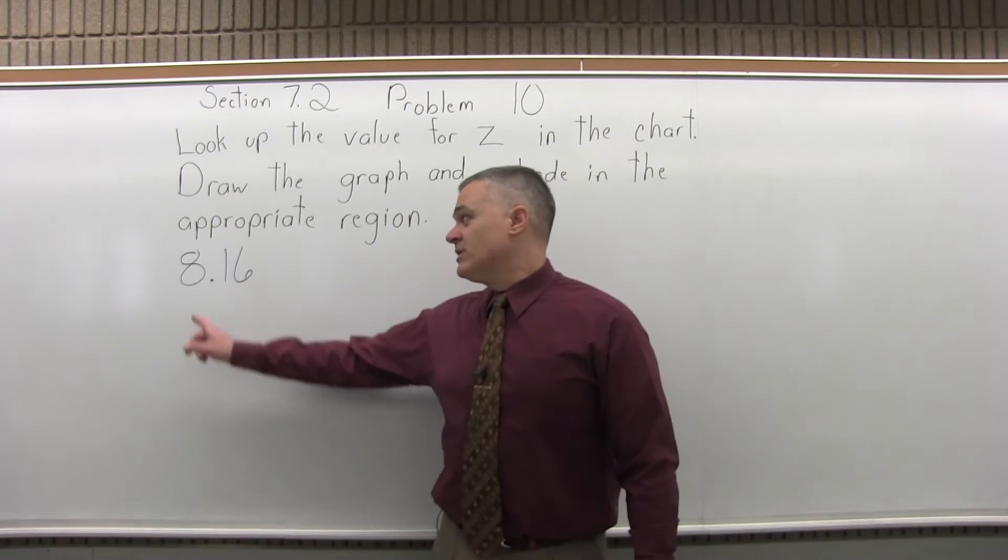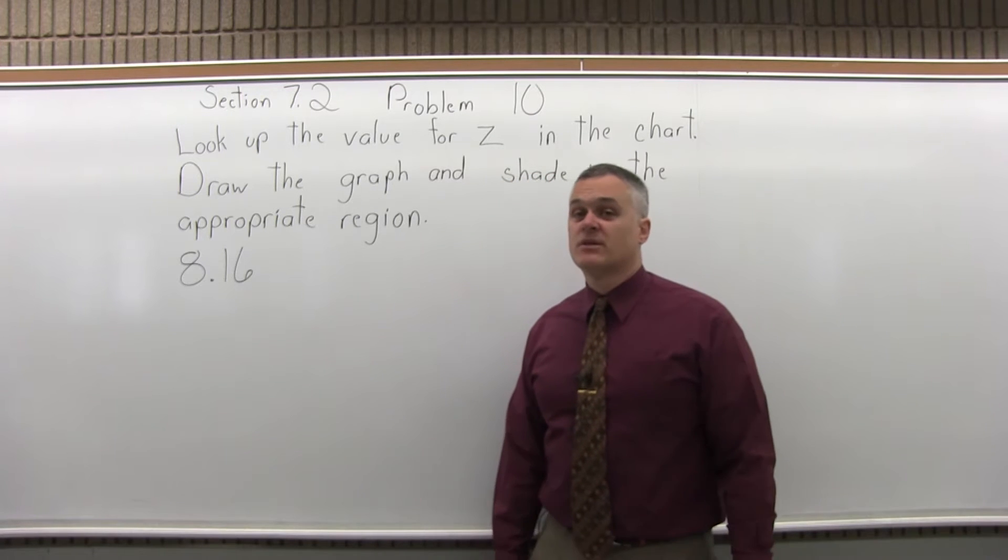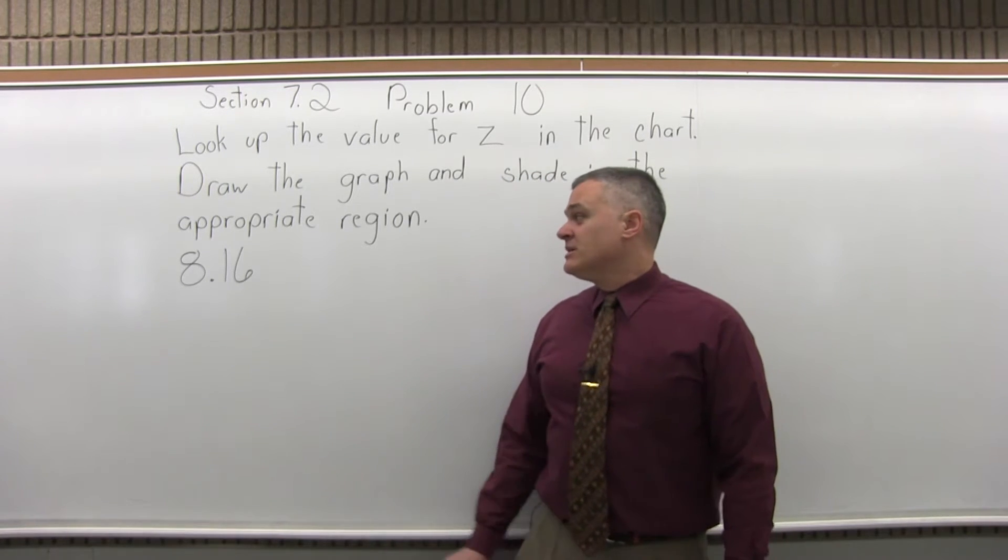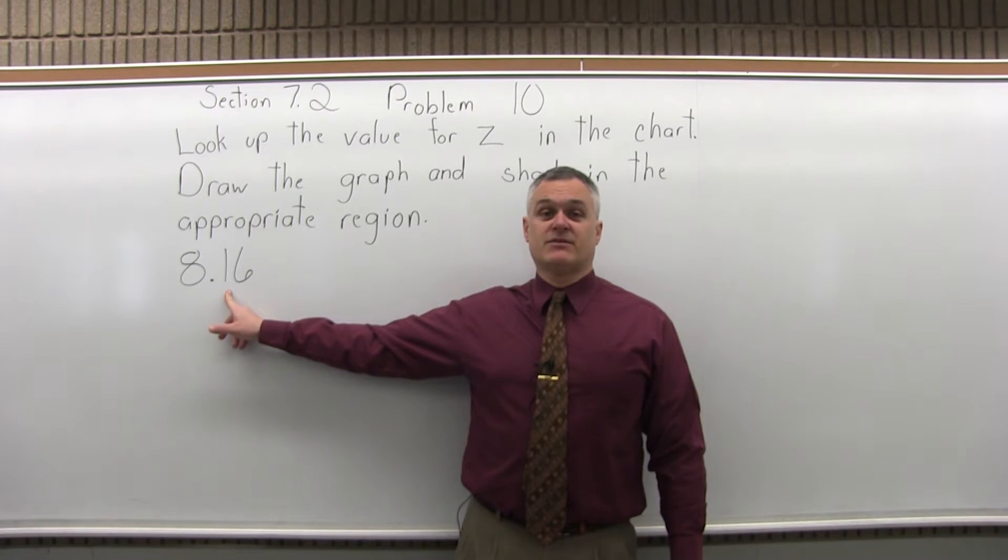The number to look up is 8.16. There's a four-step process to look up any number in the chart. Step 1 is write the number to look up so that it has two places after the decimal, and we already have two places after the decimal. So we get to move right up to step 2.